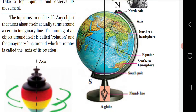What is the equator? The imaginary circle present exactly between the North and the South Pole on the surface of the earth is called the equator.